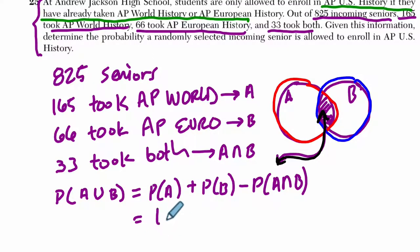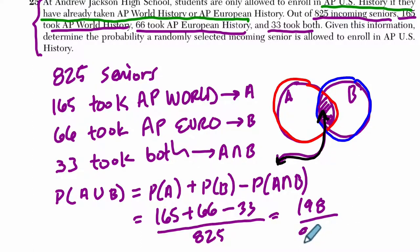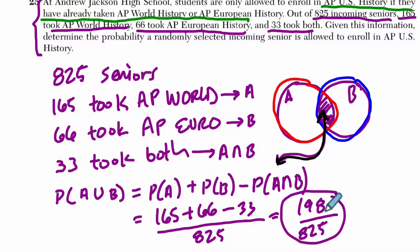So: 165 took AP World, 66 took AP Euro, and 33 took both. We add A and B and subtract the intersection, all out of 825. That gives us 198 over 825. This is the probability that a randomly selected senior took AP World or AP Euro, meaning they are eligible to enroll in AP US History.